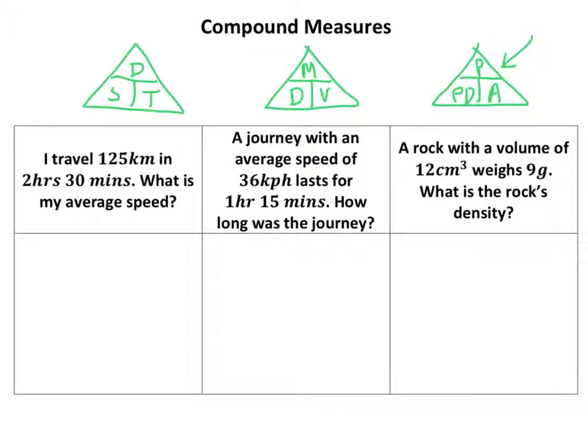So here we go. It says I travel 125 kilometers in 2 hours 30 minutes. What's my average speed? So we're working out speed, so looking at this one here, I cover the speed bit. Speed equals distance over time, okay? So speed equals distance, well that's 125, that's easy. Over, now 2 hours 30 minutes.